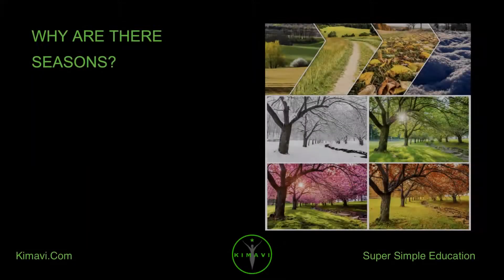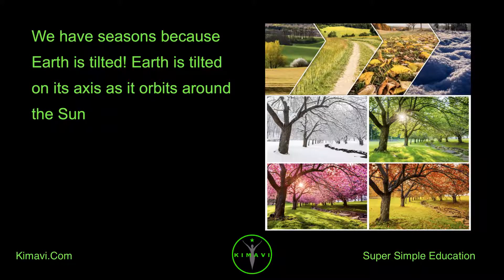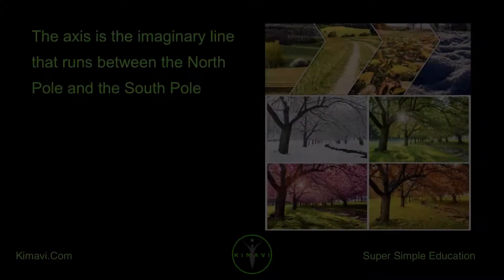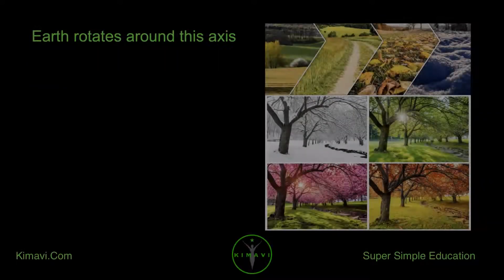Why are there seasons? We have seasons because Earth is tilted. Earth is tilted on its axis as it orbits around the Sun. The axis is the imaginary line that runs between the North Pole and the South Pole. Earth rotates around this axis.